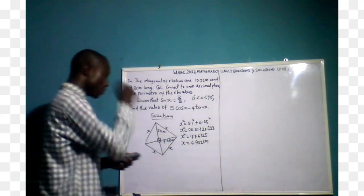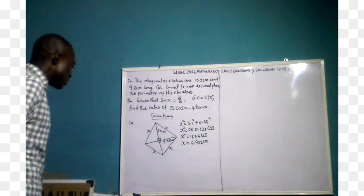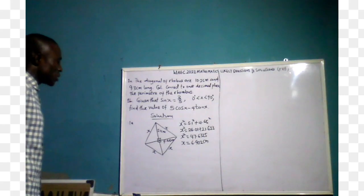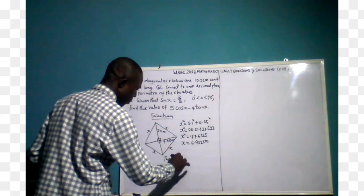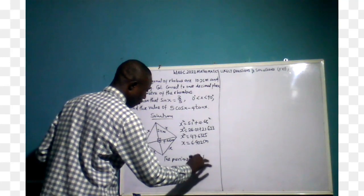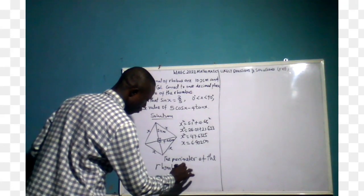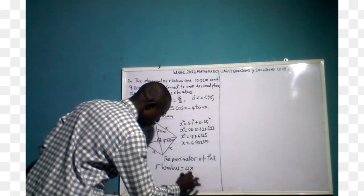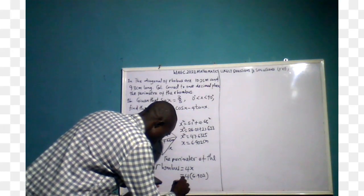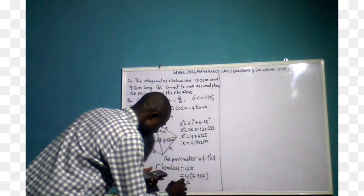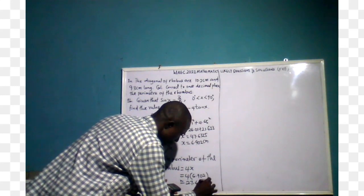The value of one side is 6.902 centimeters. Since a rhombus has four equal sides, the perimeter equals 4x, which is 4 times 6.902, giving 27.606, which approximates to 27.6 centimeters to one decimal place. That is the final answer for question 1a.